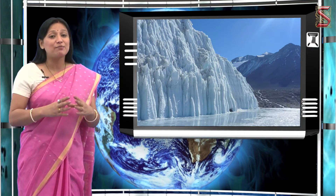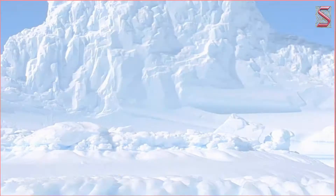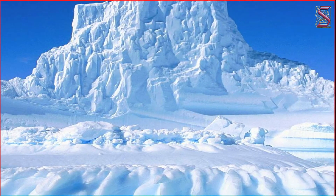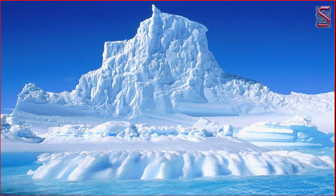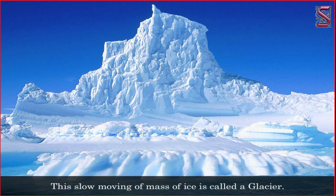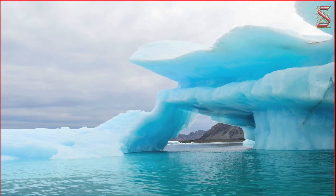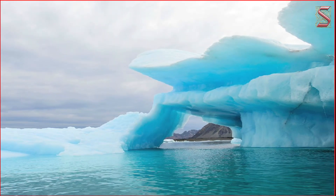There is heavy snowfall in cold areas like the Himalayas, Alps and other places. The snow eventually gets accumulated and becomes ice. As the ice begins to accumulate, it moves down slowly and reaches warmer regions. This slow-moving mass of ice is called a glacier. The movement of the glacier is very slow when compared with water.